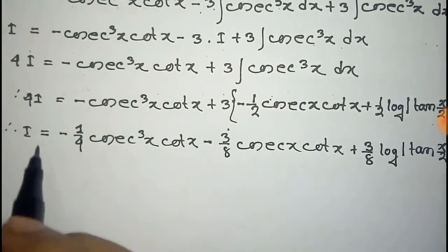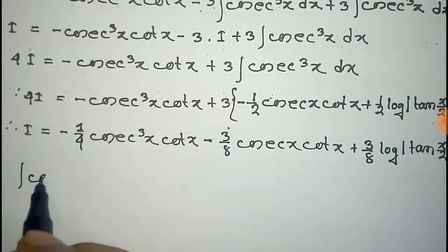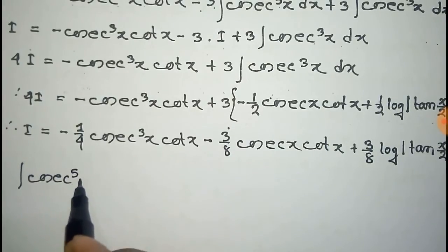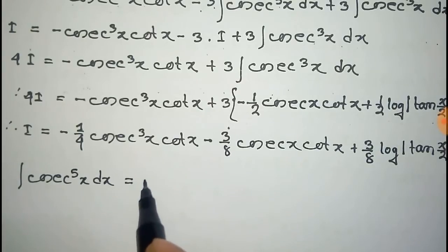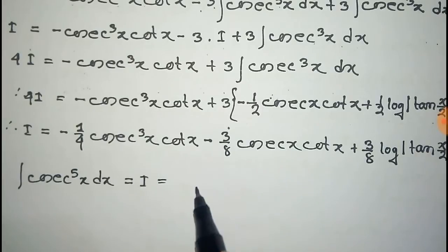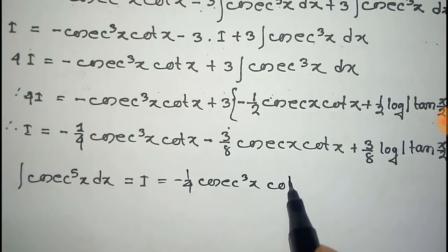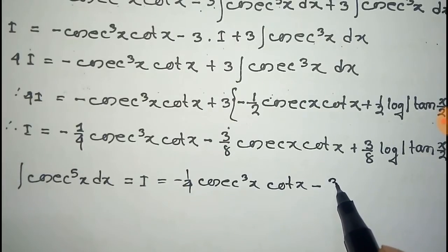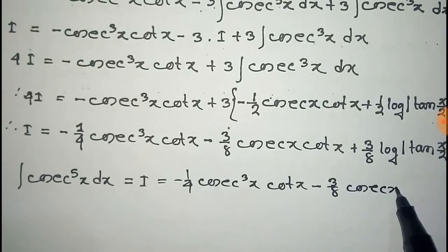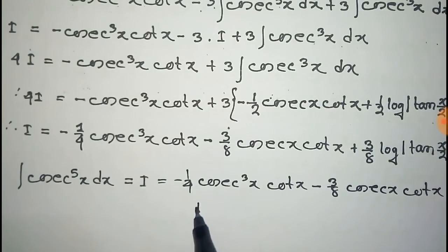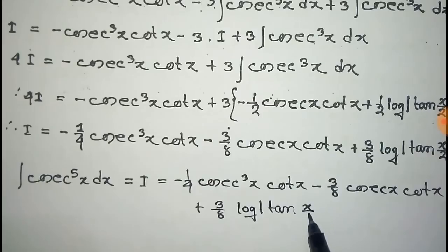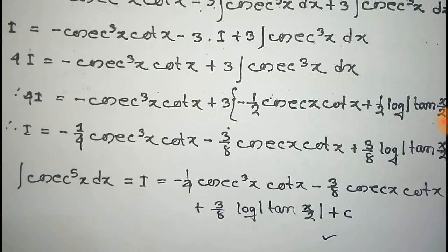And I is the integration, so we have calculated that the integration of cosec to the power 5x dx is given by minus one-fourth cosec cube x cot x, minus 3 by 8 cosec x cot x, plus 3 by 8 log of mod of tan x by 2, plus a constant. Thus we have integrated cosec to the power 5x dx.